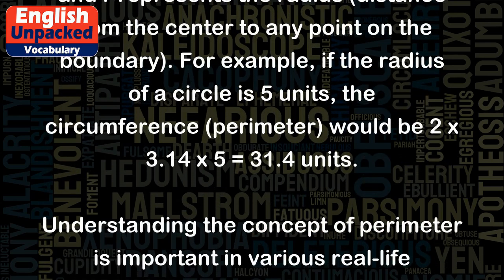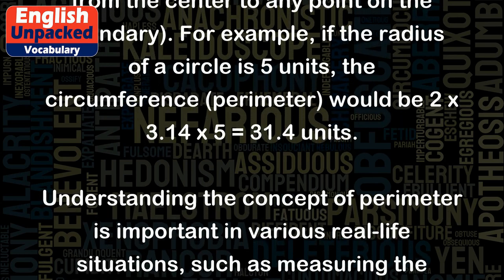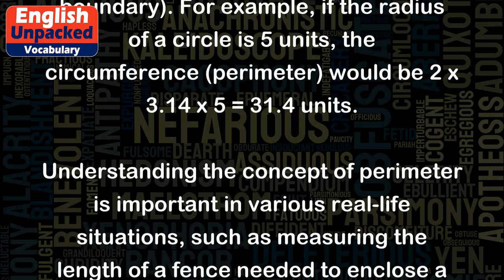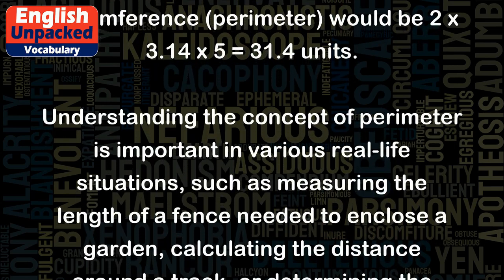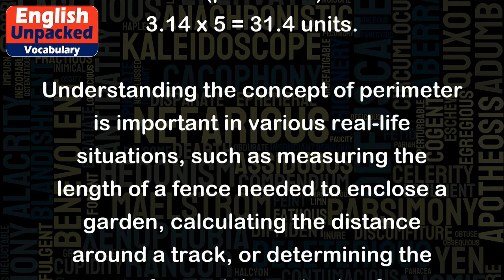For example, if the radius of a circle is 5 units, the circumference (perimeter) would be 2 times 3.14 times 5 equals 31.4 units.